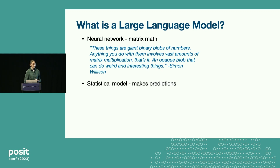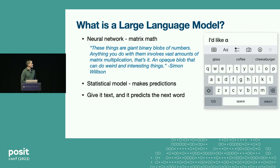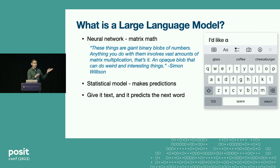Another level is that they are statistical models — they make predictions. And the things they predict are text. You give it text and it'll predict what the next word should be. In a way, it's similar to the keyboard on your mobile phone. If I've written "I would like A," then it gives me some possible next words — in this case: glass, coffee, and cheeseburger.